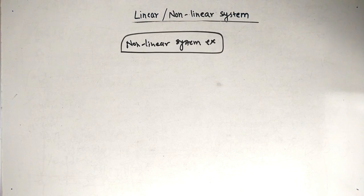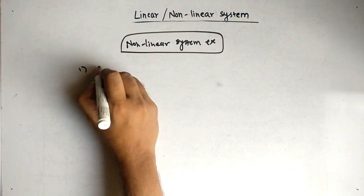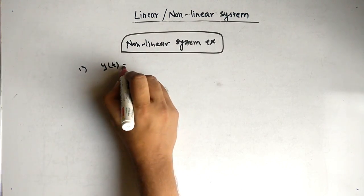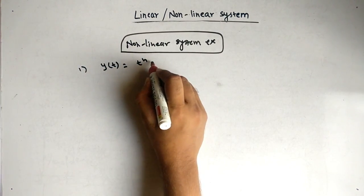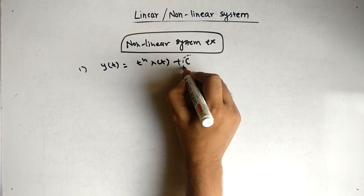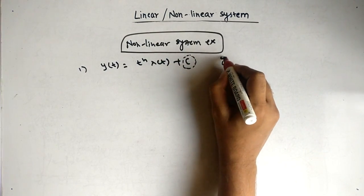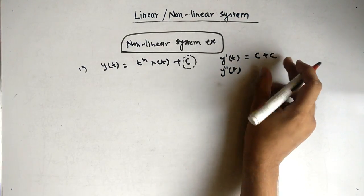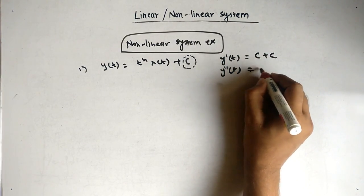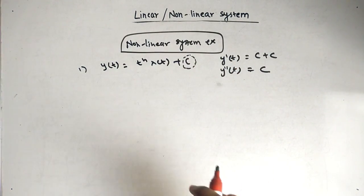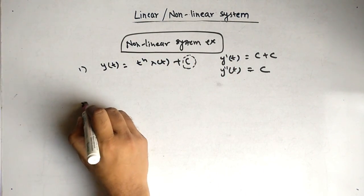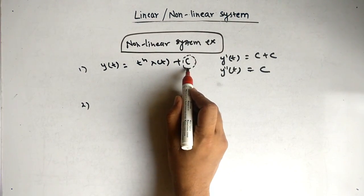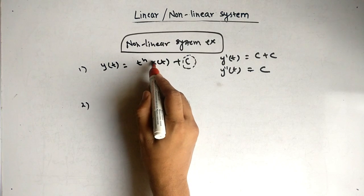Now let's see examples of nonlinear systems. First: if we have y of t equal to t raised to n times x of t and add a constant, that constant differs between y-dash of t and y-double-dash of t — we get the constant added twice on one side but only once on the other. So these are not equal, making it a nonlinear system. The second example: what if we square x of t?